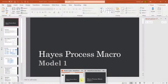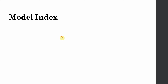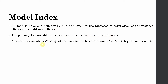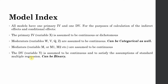Let's introduce the model. In all models, you have one primary IV and one DV with multiple mediators and moderators. Your primary IV, variable X, is assumed to be continuous or dichotomous. Moderators can be continuous, categorical, or dichotomous as well.